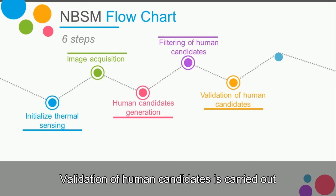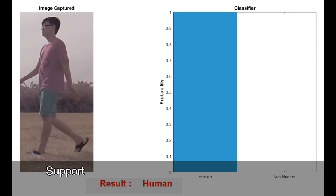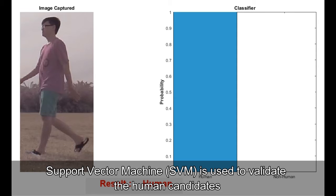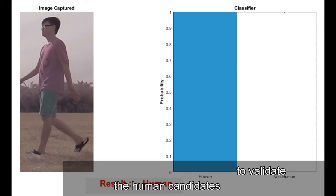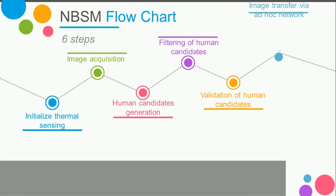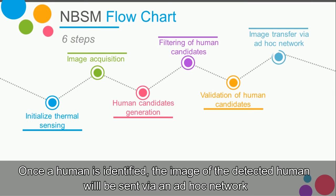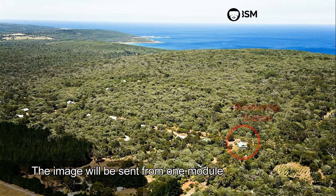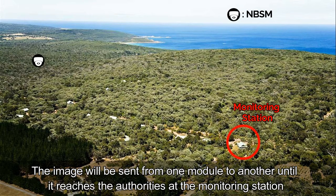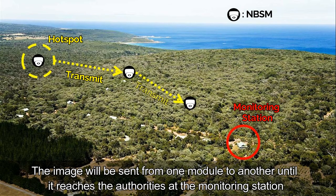Next, validation of human candidates is carried out. Support vector machine is used to validate the human candidates. Once a human is identified, the image of the detected human will be sent via an ad hoc network. The image will be sent from one module to another until it reaches the authorities at the monitoring station.